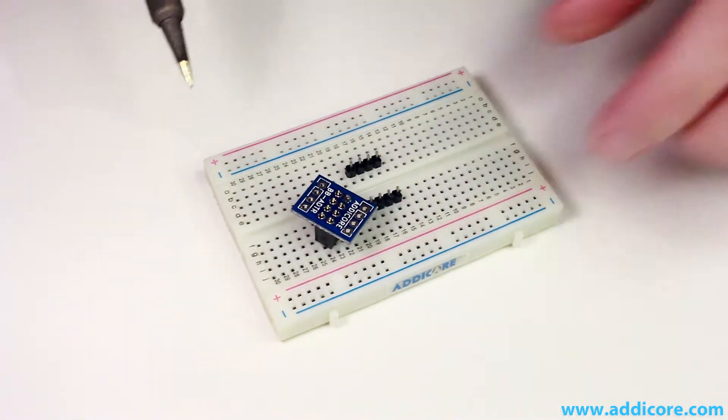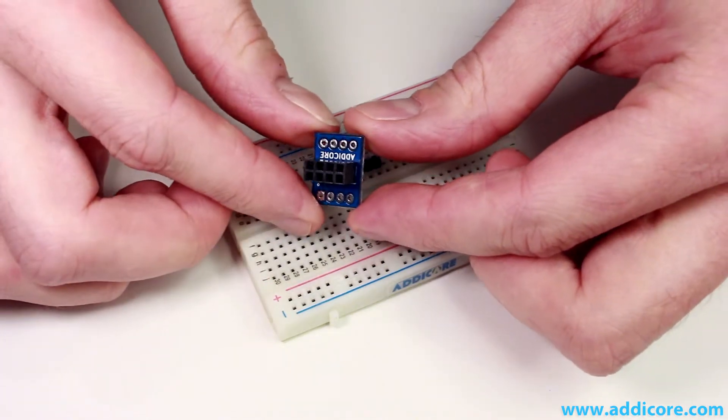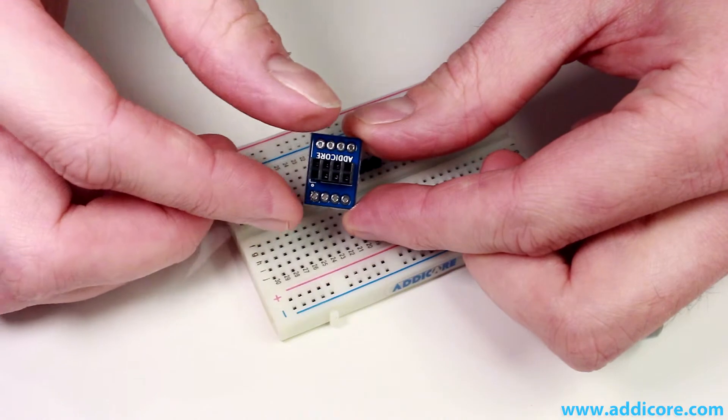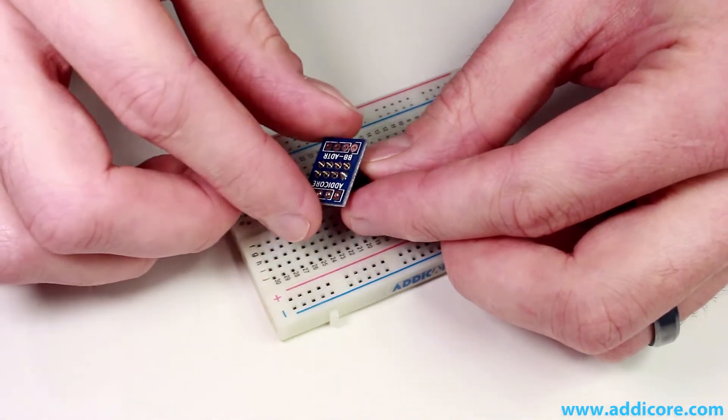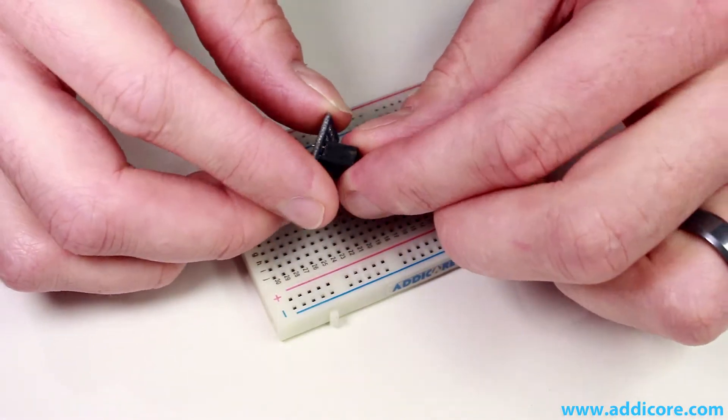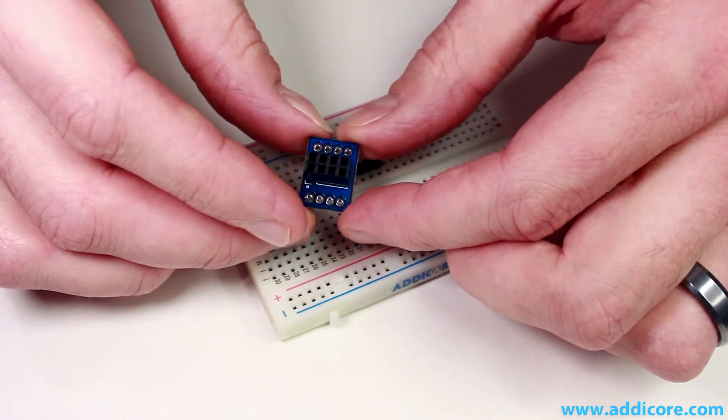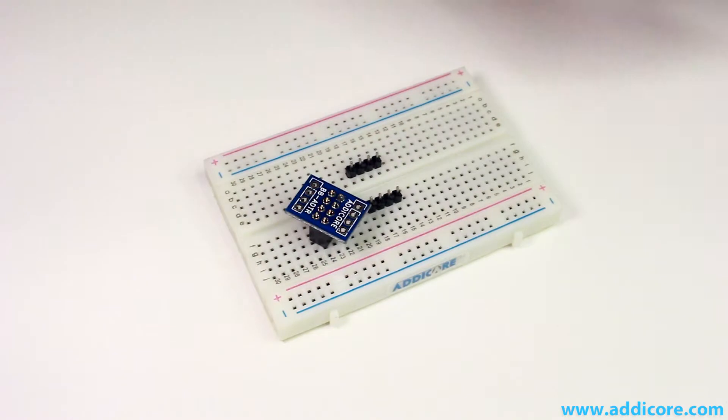Once you get that one soldered, you can take a look at the header and see if it's aligned the way you want it aligned on the board. If it has some angle, now is the time to adjust it because you can easily just reflow this solder joint we did with your iron and adjust the header. And then once it cools, check to make sure it's aligned up the way you want it again.